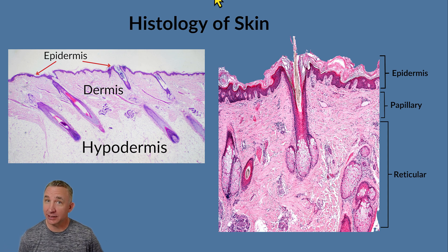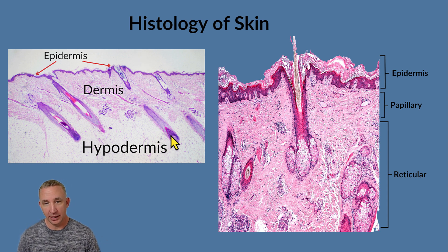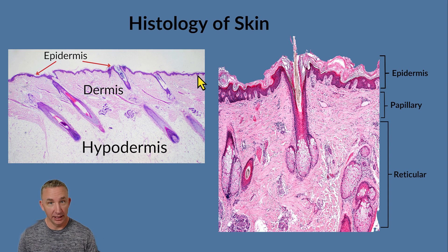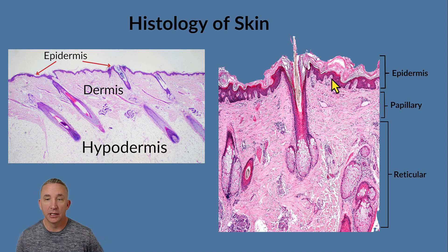In histology of the integument, we previously covered the epidermis and its five layers. Going deeper using a reference image, you can see that dark purple ribbon — when we covered epithelial tissue, that ribbon is the epidermis. It extends down because it's all stratified squamous epithelium, the type of tissue making up the entire epidermis.